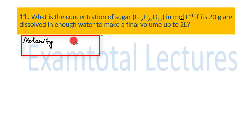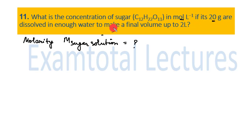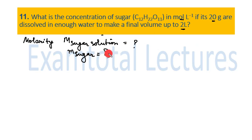We have to find the molarity of the sugar solution. Given: mass of sugar = 20 grams, dissolved in enough water. The final volume of the solution (solute + solvent mixture) is 2 liters. So mass of sugar given is 20 grams and volume of solution given is 2 liters.